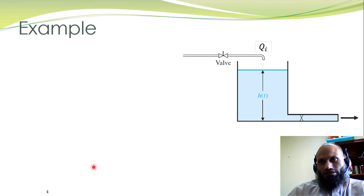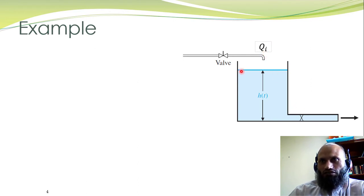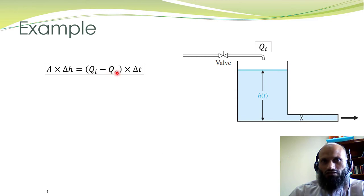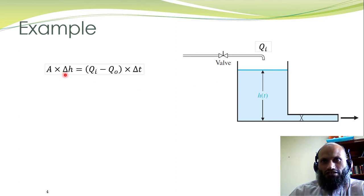Let's apply this knowledge to obtain a mathematical model for a simple process. We have an inflow rate, an outflow rate, and the level of the liquid H(t). During a short time interval delta-T, the inflow rate Q_i minus the outflow rate Q_0, multiplied by delta-T, equals the differential change in the volume of the fluid inside the tank. Here delta-H is the small change in the height of the liquid and A is the cross-sectional area of the tank.